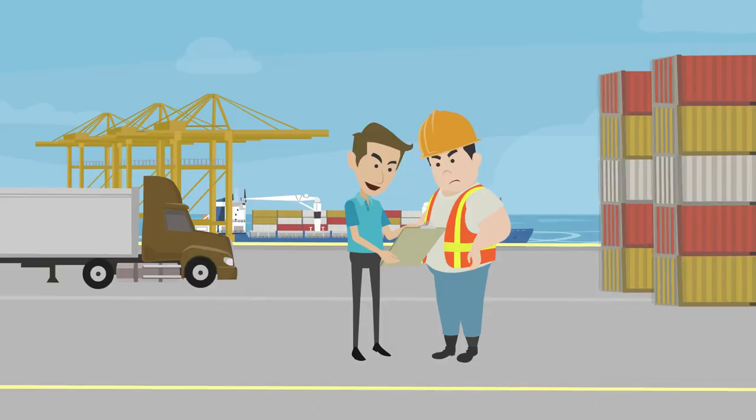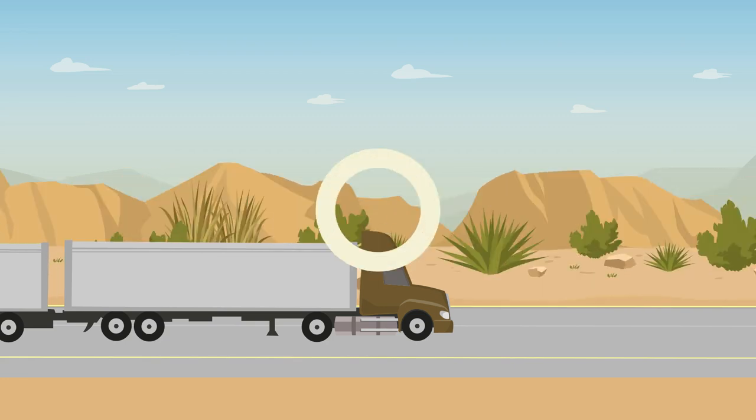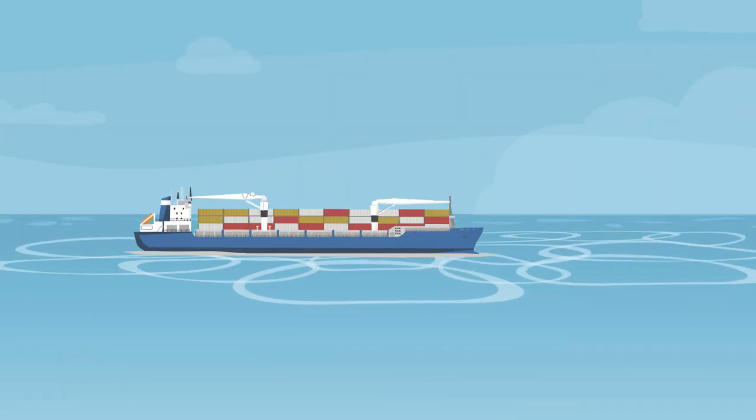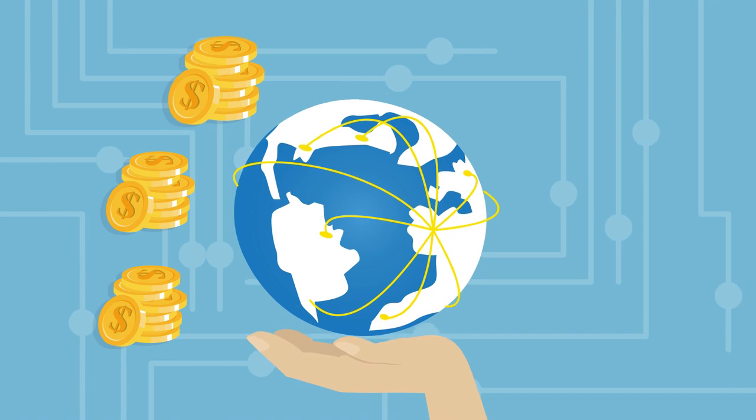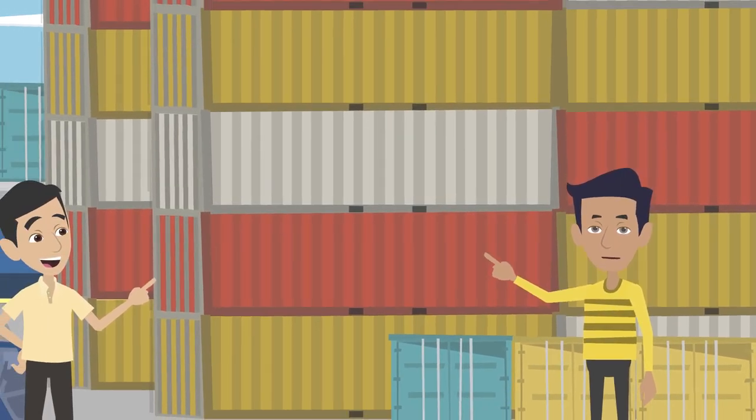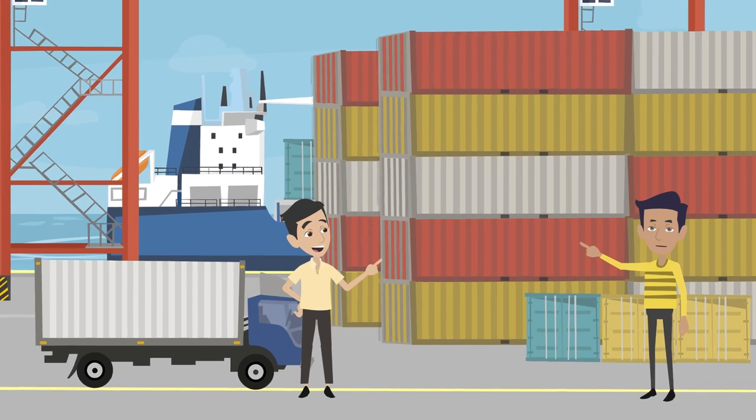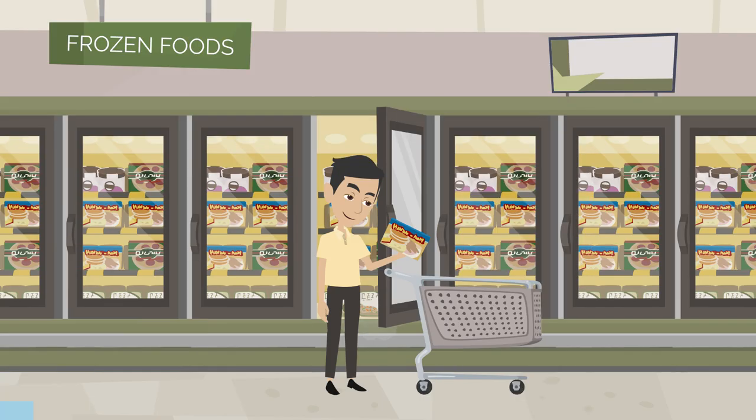In short, container shipping plays a vital role in our lives, and the colorful containers that we see on ships are more than just a pretty sight. They are an integral part of the global economy and the backbone of international trade. So next time you see a colorful container on a ship, you'll know the reason behind the different colors, the importance of container ships in our daily lives and how it keeps the global economy moving.